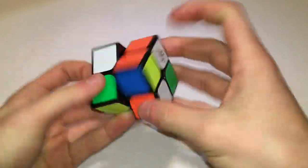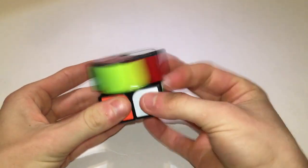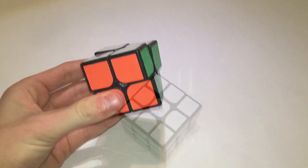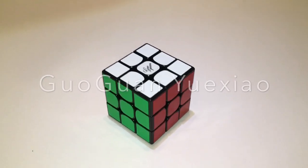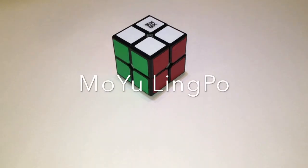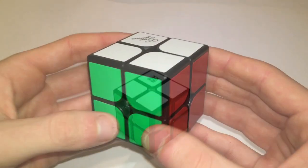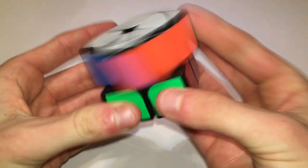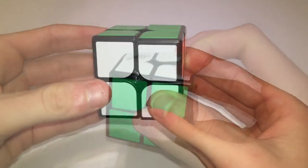The turning on this puzzle was surprisingly amazing right out of the box. This puzzle did have its own unique feel right out of the box, with hints of the Guo Guan Yue Xiao and the Mo Yu Ling Po. However, this 2x2 is a really light 2x2, meaning it turns very fast and has a feeling very hollow inside. It's also very scratchy and clicky.